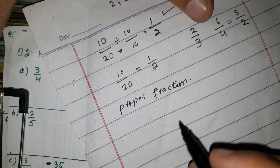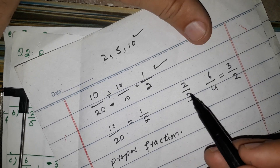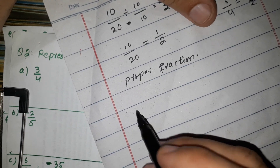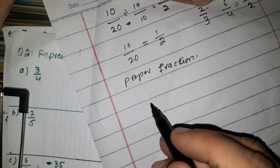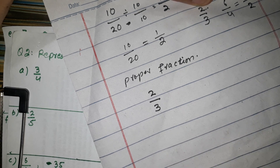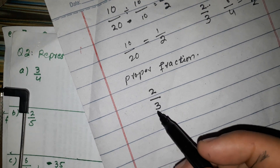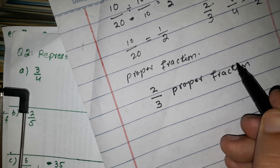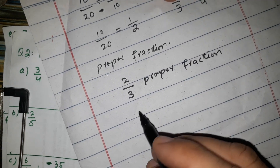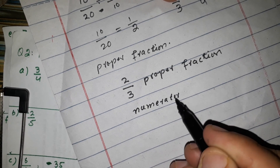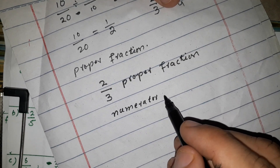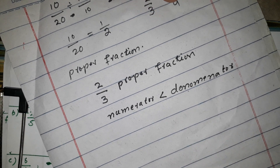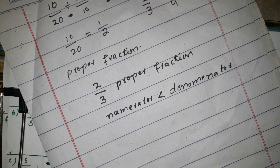If it is a proper fraction, the numerator is less than the denominator. For example, 2 by 3: here 2 is the numerator and 3 is the denominator. So numerator is less than denominator — that is the condition for a proper fraction.